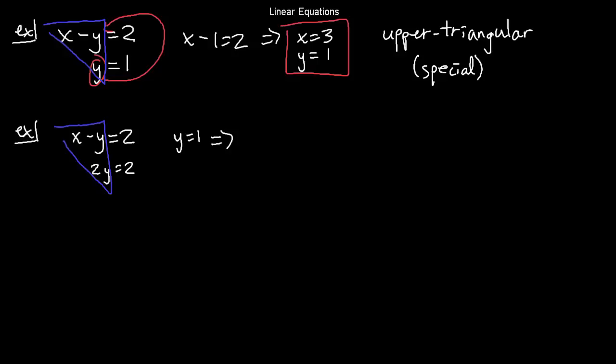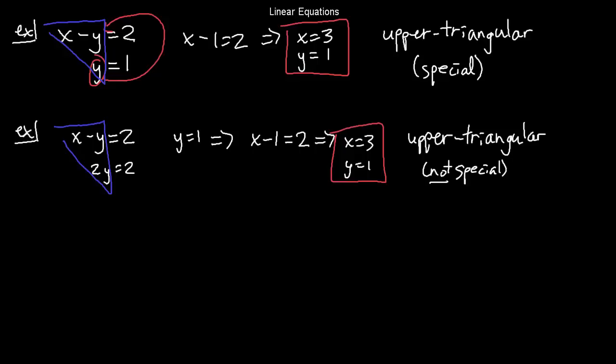And so, once again, x minus 1 had better be equal to 2, and so x equals 3, y equals 1. You see that the system still has this triangular shape, but is no longer special because of that 2 in front of the y on the second equation. This is an upper triangular system of linear equations. Those are our favorite ones to solve. We like upper triangular systems because once you've put them in a triangle, you can go to the very bottom, the last equation, and just plug in, and that's called back substitution.